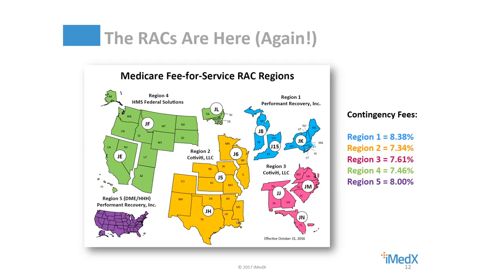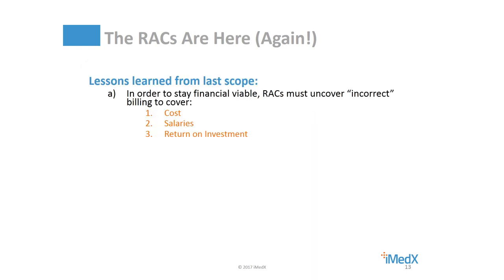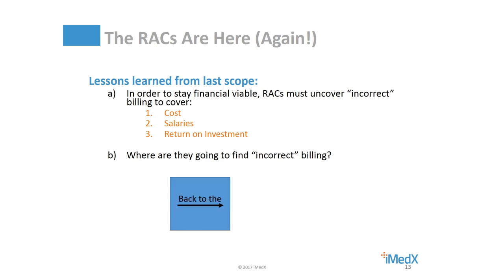And like it or not, the RACs are back. Their scope of work is essentially unchanged from the prior scope. Even though the AHA lobbied hard to get rid of contingency fee-based RAC revenues, it didn't happen. CMS did narrow the previous range from 3% to 1%. So if the RACs' revenue stream has to cover their cost of doing business, salaries, and a return on investment — because these folks are in business to return a profit — where are they going to find incorrect billing? Back to the well. They're not going to waste time and resources auditing a DRG for a facility who has few, if any, errors, or is worth little reimbursement.